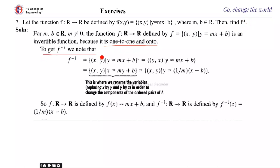So how do we find the inverse? We note that f inverse = {(x, y) : y = mx + b} — the converse. The converse is obtained by interchanging x and y. So from {(x, y) : y = mx + b}, we interchange (x, y) to (y, x).